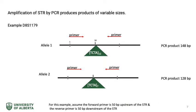To ascertain the phenotypes of family members for an STR, standard endpoint PCR can be performed. A primer is designed to anneal to conserved regions flanking the STR locus. The forward primer anneals 50 base pairs upstream from the start of the STR, and the reverse primer anneals 50 base pairs downstream. The PCR product length equals 100 base pairs plus the STR length. For the example on this slide, the STR on allele 1 is 48 base pairs, giving a PCR product of 148 bp, and the STR on allele 2 is 28 base pairs, giving a product of 128 bp.